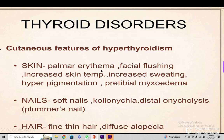The skin will show palmar erythema and facial flushing, increased skin temperature, increased sweating, hyperpigmentation, and pretibial myxedema. For nails: soft nails, koilonychia, distal onycholysis — that is called Plummer's nail.